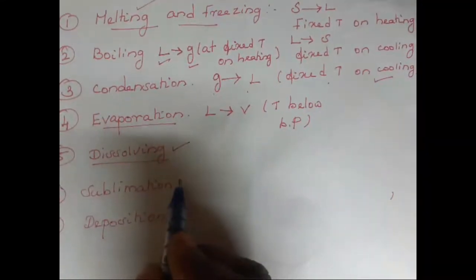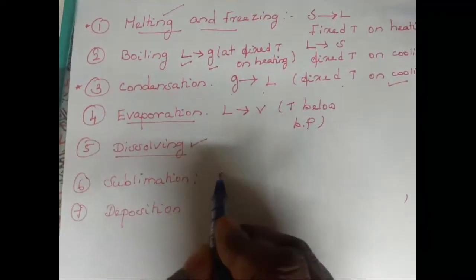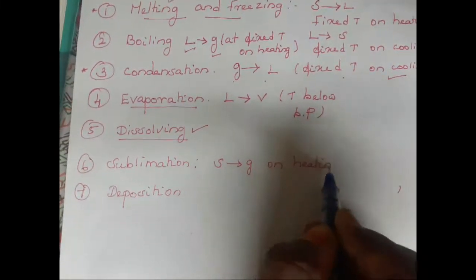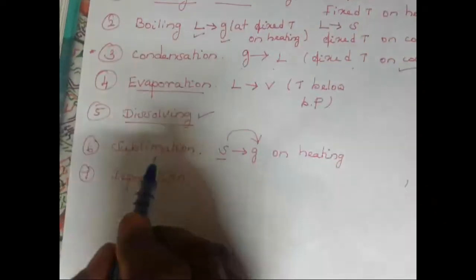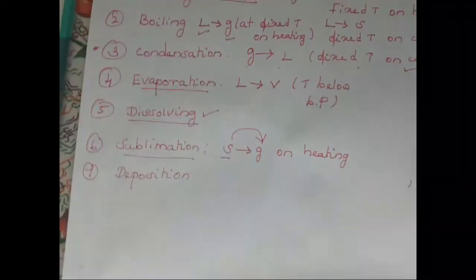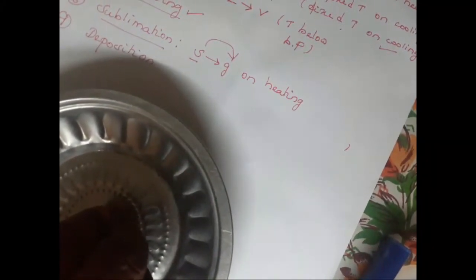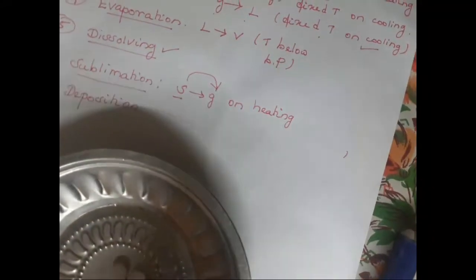Now we are going to move to sublimation. The process of change of solid directly into gas on heating is called sublimation. We are going to heat a solid substance and when it directly changes into gas, it is called sublimation. For this activity we need a sublime substance — a substance which has the capability to change from solid into gas directly on heating. Examples of such sublime substances are camphor, iodine, solid carbon dioxide, and naphthalene balls.